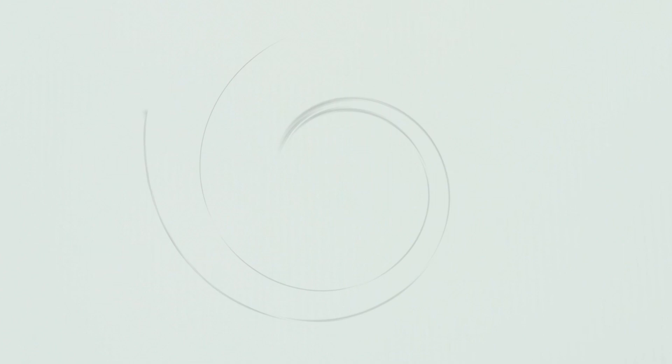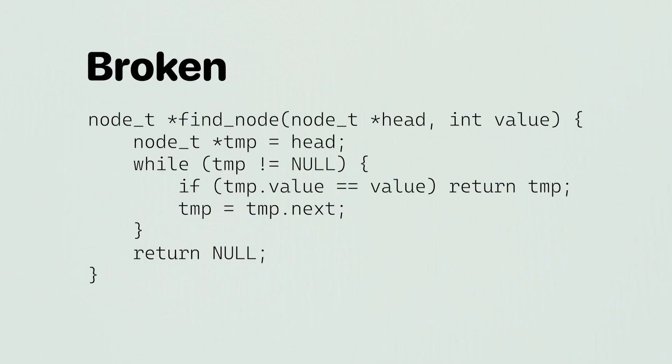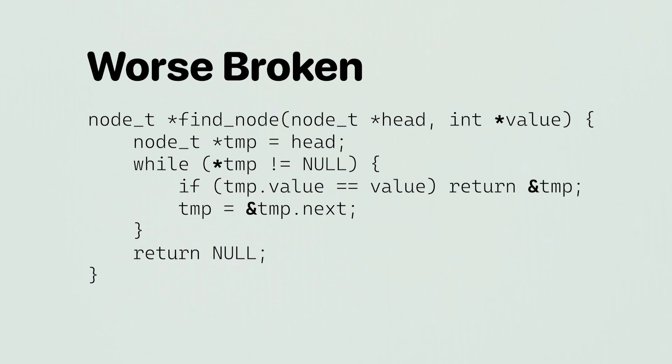Remember to free your heap blocks, but only once please. Initialize your variables before using them. Use only bytes you allocated. For some reason, memcpy is defined in string.h, so include it. Most copy functions take the destination first, and that's just weird. Ampersands and asterisks are not like salt — randomly sprinkling them in your code will not make it better.